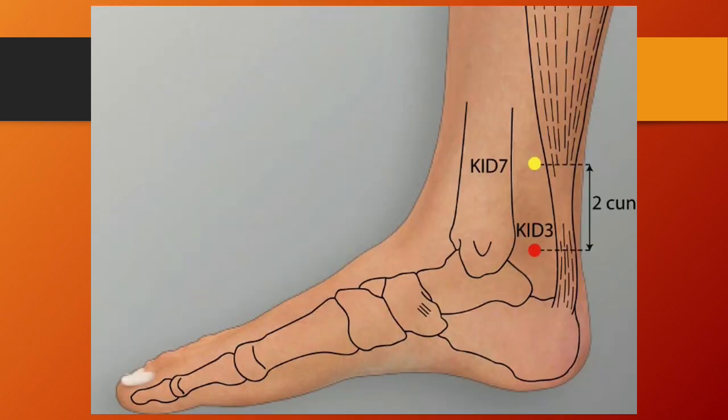Kidney 3, Taixi or great stream, is located on the medial aspect of the foot, posterior to the medial malleolus, in the depression between the tip of the medial malleolus and the tendocalcaneus. Kidney 3 is the yuan-source point and shu-stream point of the kidney channel. Functions: tonifies the kidney yin and yang. Kidney 3 is important for any kidney deficiency pattern. Needling: perpendicular insertion, 0.5 to 1 tsun.